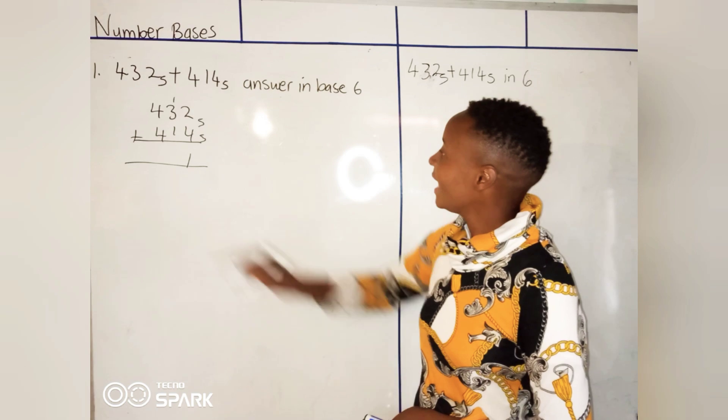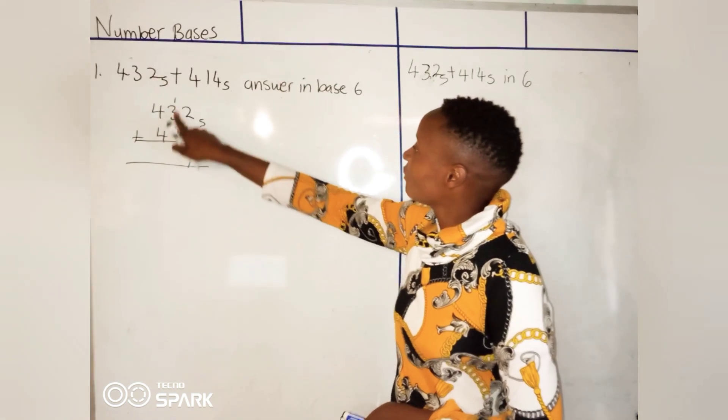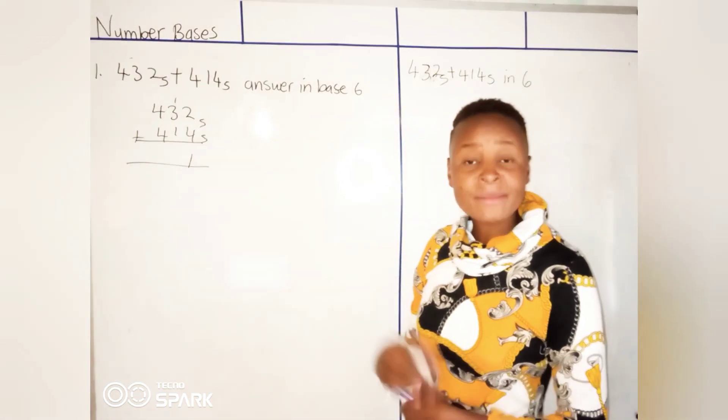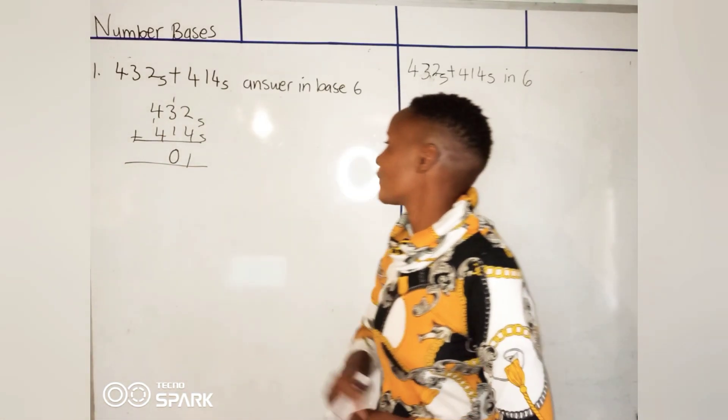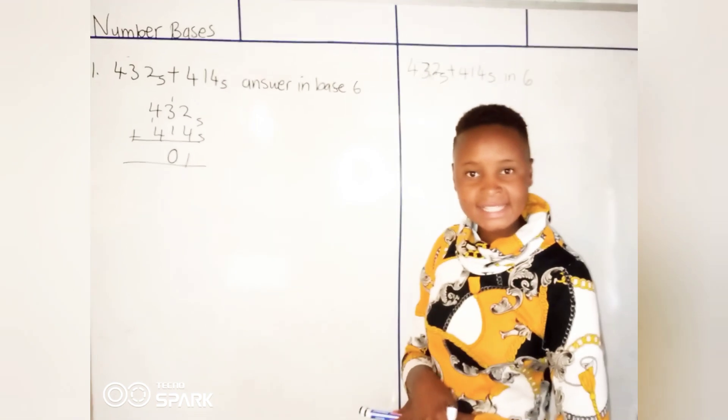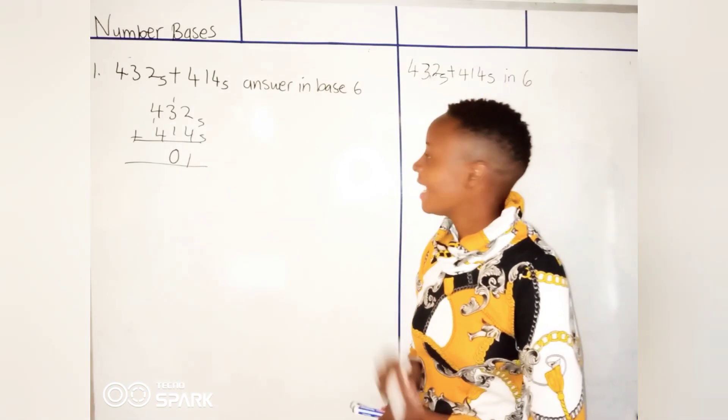3 plus 1 is 4, 4 plus 1 is 5. How many times does 5 get into 5? It's 1 remainder 0. 4 plus 4 is 8, 8 plus 1 is 9. How many times does 5 get into 9? It's 1 remainder 4.